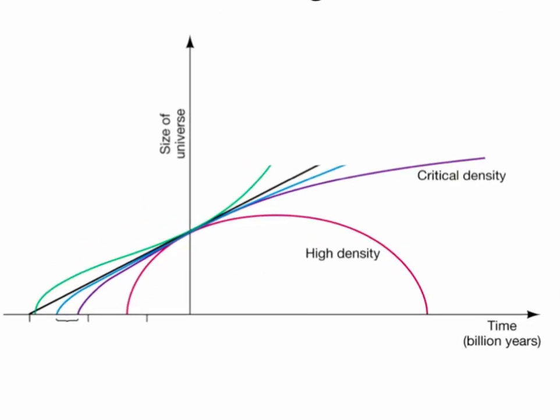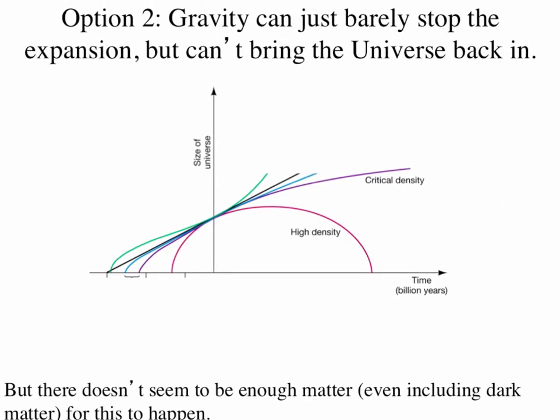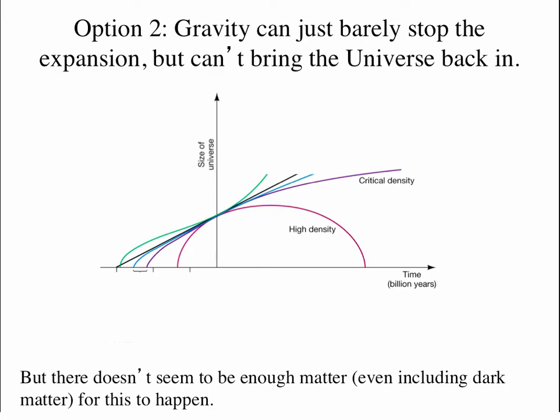Our second option. If you have just enough matter in the universe, gravity can slow down the expansion and bring the expansion to a stop after a long period of time. But gravity would not be strong enough to bring it back in. This is what's called the critical case of the universe. So in this case the universe will get larger and larger and larger, but over time that increase in size will get slower and slower, and hundreds of billions of years from now, trillions of years from now, it would look like the universe is just barely expanding. But there's not enough material to bring it back in. This option also seems to be ruled out because there doesn't even seem to be enough matter to slow down the expansion of the universe by this much, even if we include dark matter. So we throw this in here for completeness, but it doesn't seem to be what's going to happen.